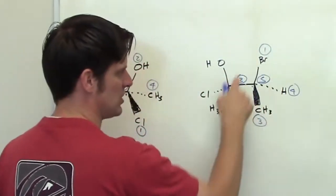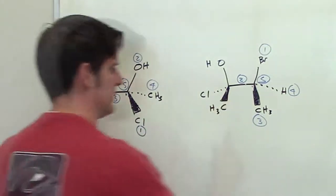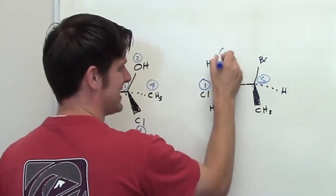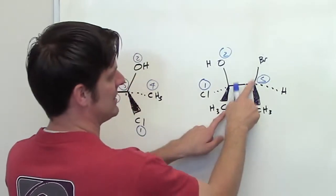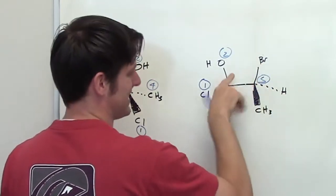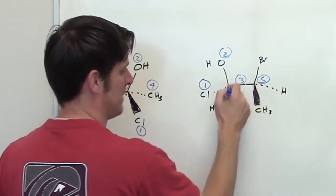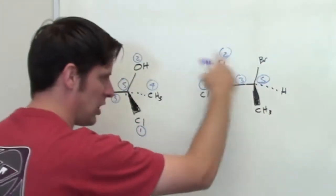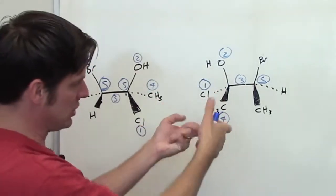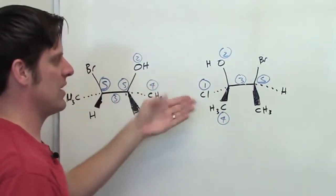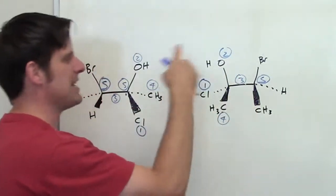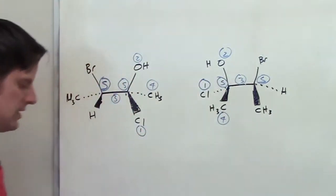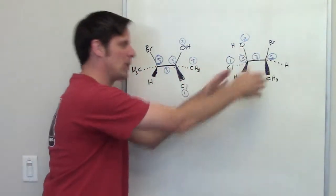Now I'll erase these numbers and do the same thing for the stereocenter at the left. The leftmost stereocenter is bound to an oxygen, a chlorine, a carbon, and a carbon. Chlorine wins, followed by oxygen in second place. Carbon and carbon tie, so I go out to break the tie — bromine wins over hydrogen, which means this entire branch is priority group number three, and the methyl is priority group number four. Going from one to two to three looks clockwise; however, group number four is pointing three-dimensionally towards us. Imagining the view from the opposite side, going from one to two to three would be counterclockwise, which means this stereocenter is also S. So the molecule at left is SS and the molecule at right is SS.